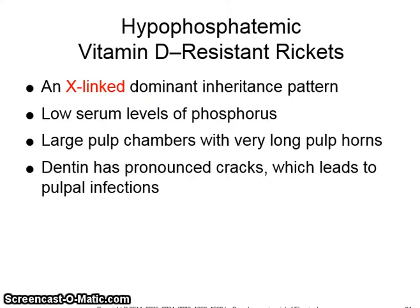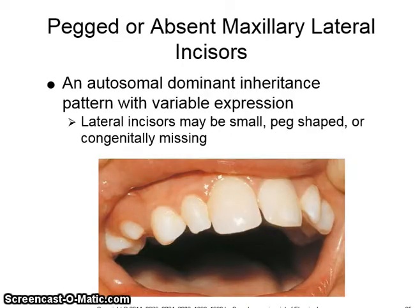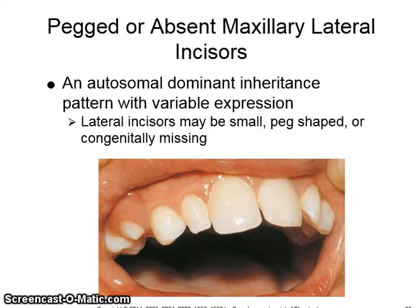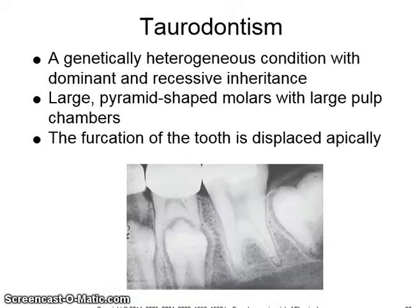Hypophosphatemic vitamin D-resistant rickets is an X-linked dominant inheritance. Low serum levels of phosphorus result in large pulp chambers with very long pulp horns. The dentin has pronounced cracks which lead to pulpal infections. Pegged or absent maxillary lateral incisors is an autosomal dominant inheritance pattern with variable expression — the lateral incisors may be small, peg-shaped, or congenitally missing, unilaterally or bilaterally. Taurodontism is a genetically heterogeneous condition with dominant and recessive inheritance, featuring large pyramid-shaped molars with large pulp chambers and the furcation of the tooth displaced apically.